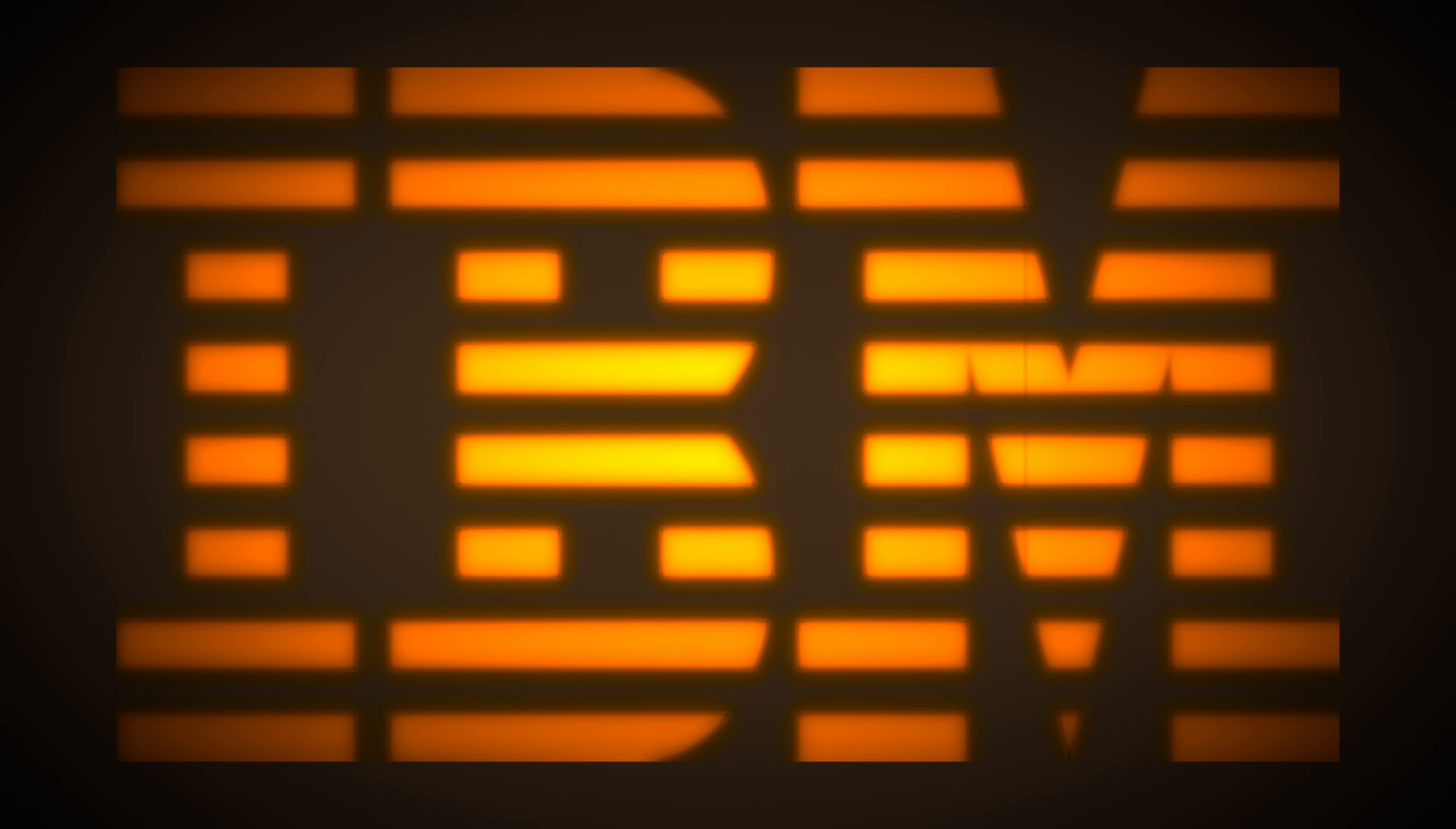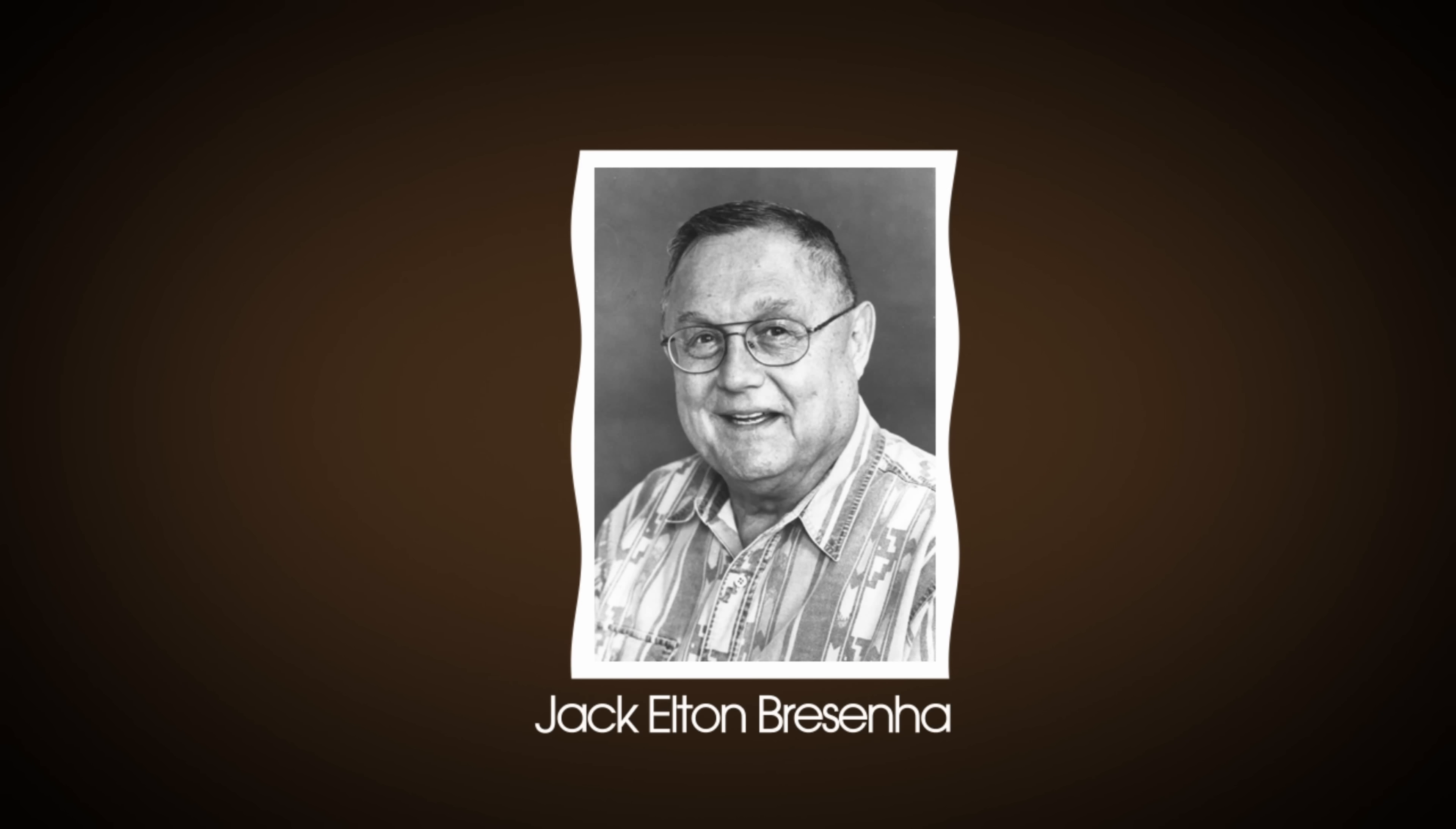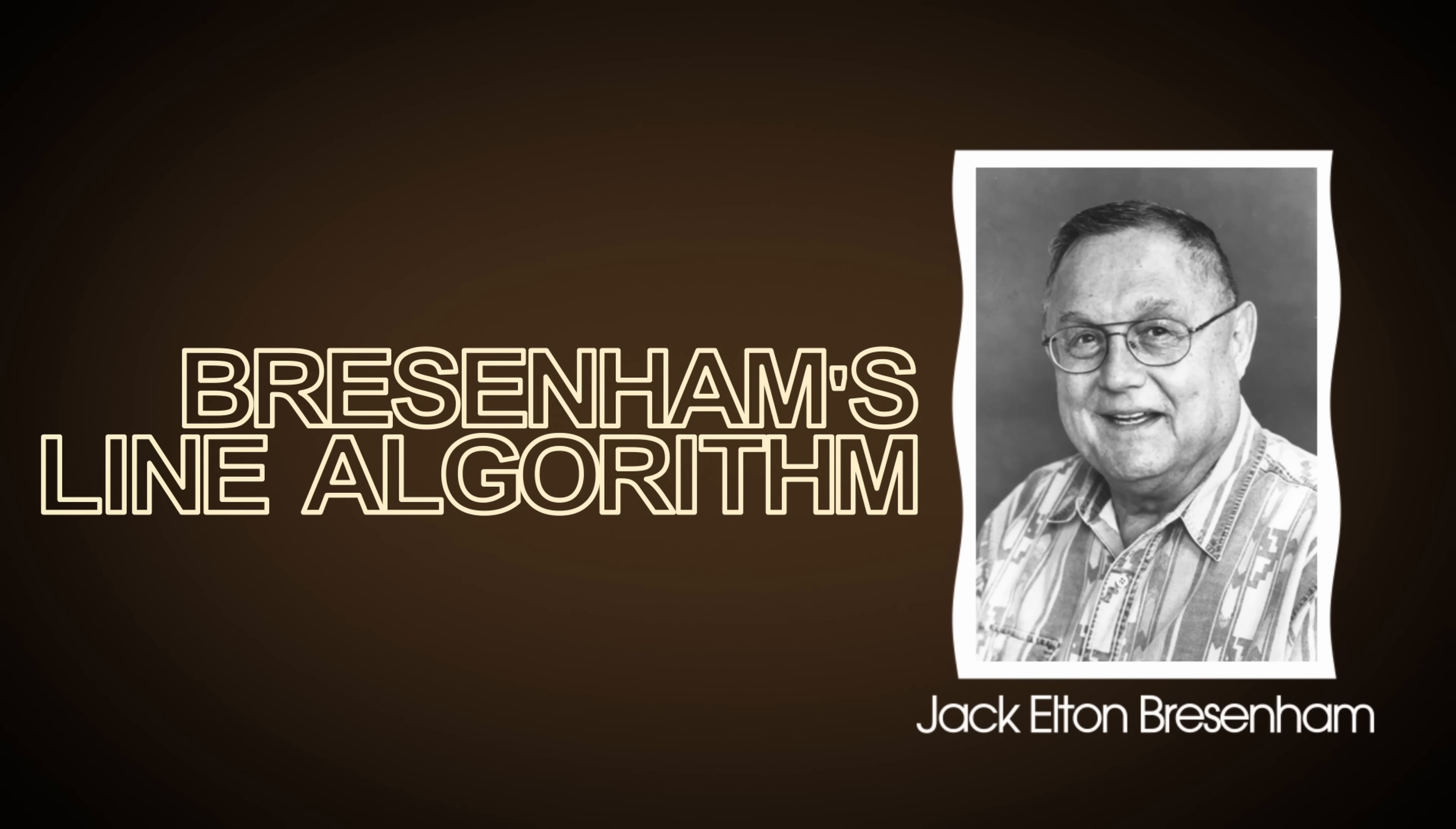While working at IBM, a computer scientist named Jack Elton Bresenham devised an algorithm that allows just that, a pixel approximation to a line. This method is later creatively named Bresenham's Line Algorithm, and becomes one of the earliest algorithms developed in the field of computer graphics.